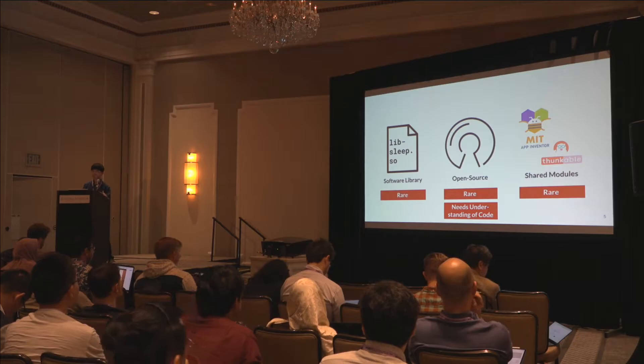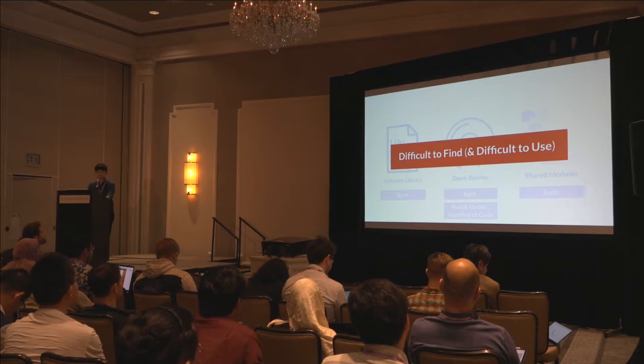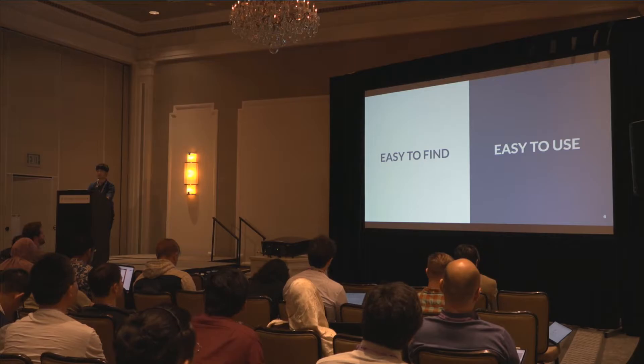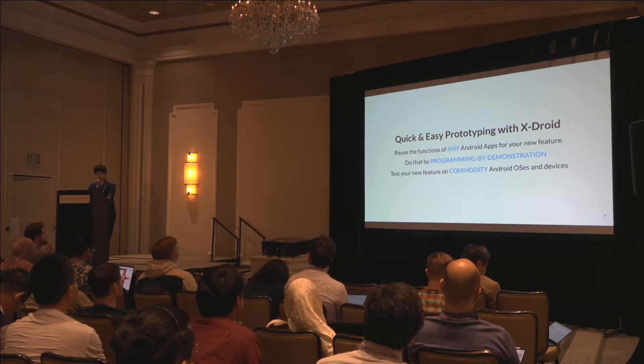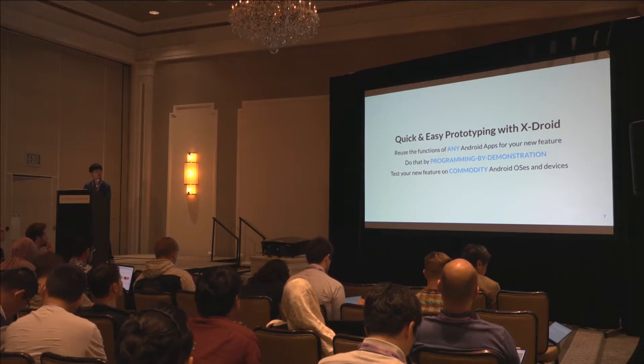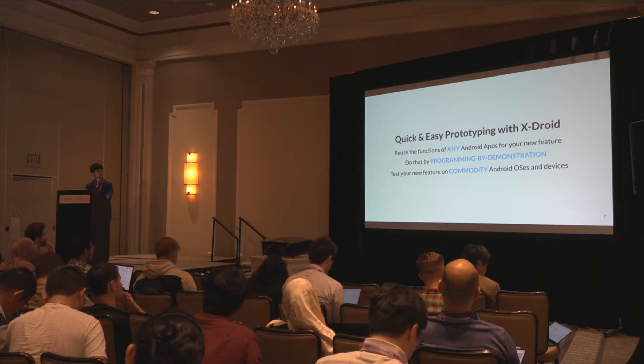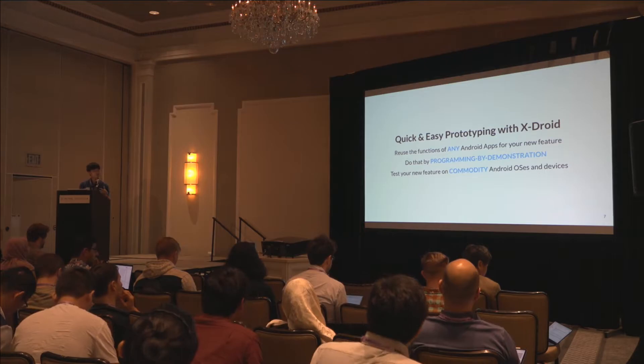In summary, there are software resources you can use for prototyping, but they are mostly difficult to find and sometimes difficult to use. So why can't we have something easy to find and easy to use? To answer this question, we present CrossDroid, which enables quick and easy prototyping by allowing developers to reuse the functions of any existing Android apps, using programming by demonstration, which I'll explain shortly.